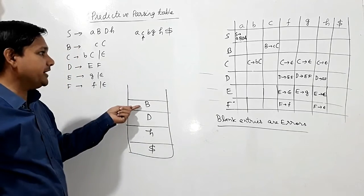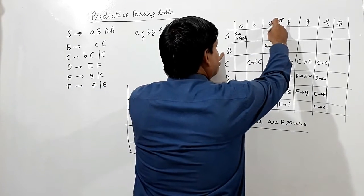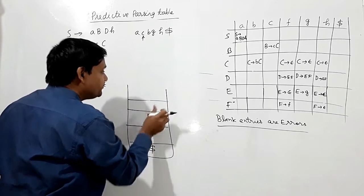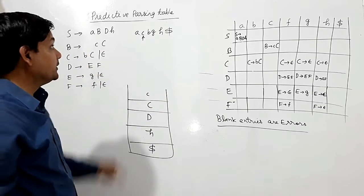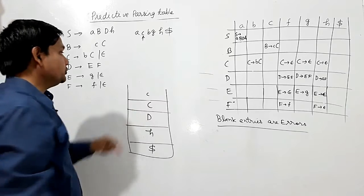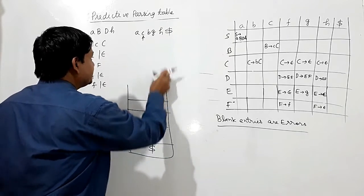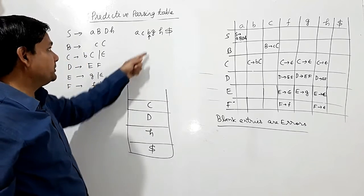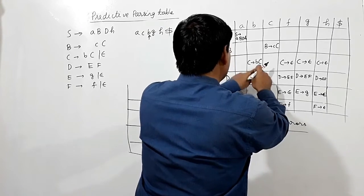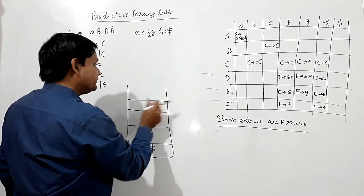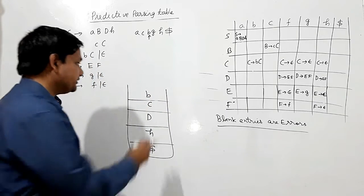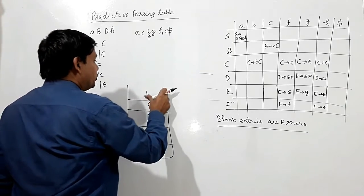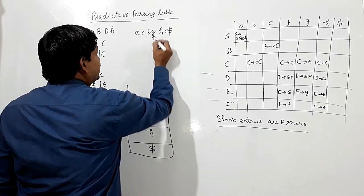Next we have B on the stack and C as the current input. Cell [B, C] gives B→CC, so we pop B and push CC. The top C matches input C, so we pop C and advance. Now we use C with input B: cell [C, B] gives C→BC, so we pop C and push BC. B matches input B, so we pop B and advance.